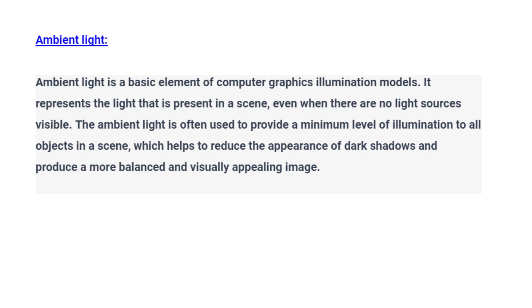Ambient light is a basic element of computer graphics illumination models. It represents the light that is present in a scene, even when there are no light sources visible. Ambient light is often used to provide a minimum level of illumination to all objects in a scene, which helps to reduce the appearance of dark shadows and produce a more balanced and visually appealing image.